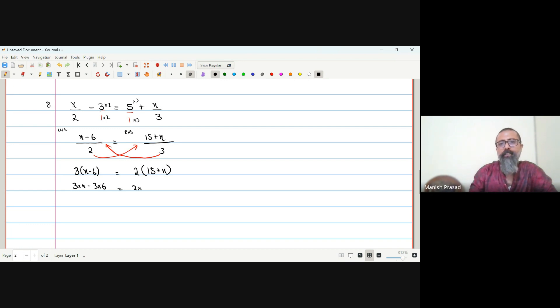2 multiplied by 15 plus 2 multiplied by X. So, what is 3 multiplied by X? 3X. Perfect. 3 multiplied by 6. 18. 15 multiplied by 2. 30. 2 multiplied by X. 2X.